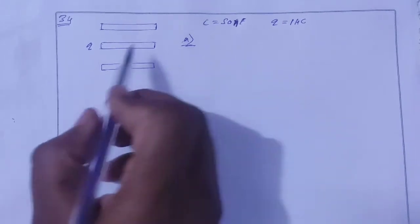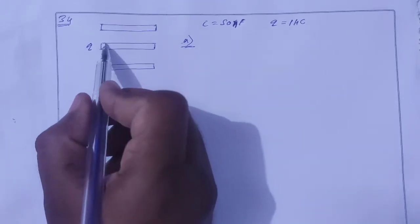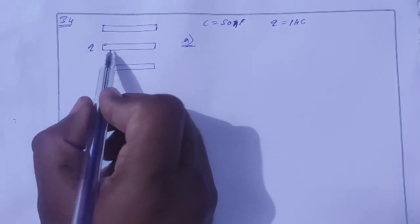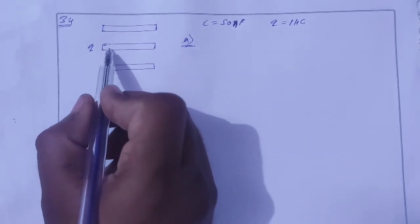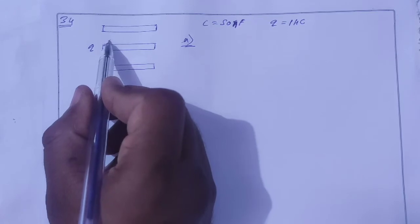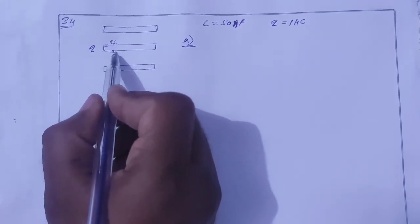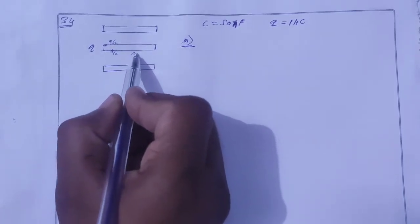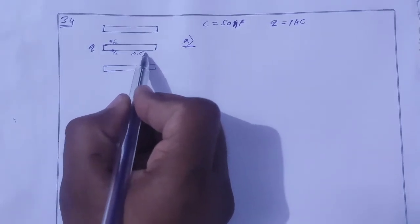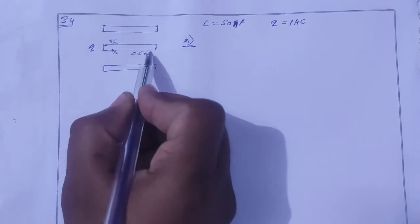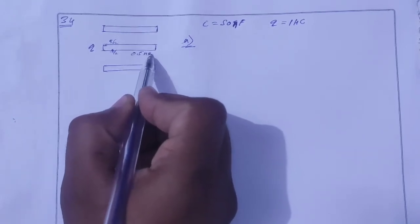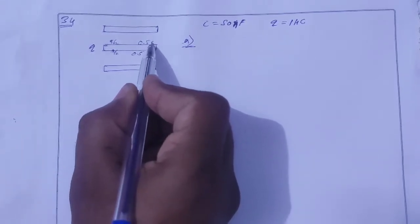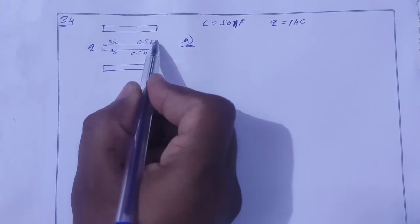The charge on the middle plate is one microcoulomb. Since the plate area is equal, the charge divides as Q/2 on each side. So here is 0.5 microcoulomb and here is 0.5 microcoulomb — both positive, adding up to 1 microcoulomb.